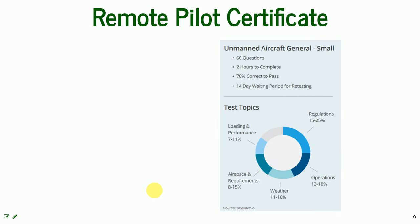The certificate exam consists of 60 questions. You have two hours to complete it and must achieve at least 70 percent correct to pass. There is a 14-day waiting period for retesting — if you fail, you must wait two weeks before taking the test again. However, there is no limit to how many times you can take the test.